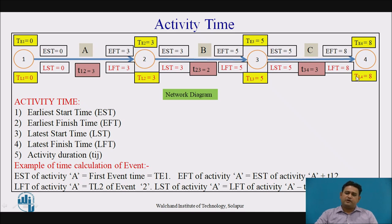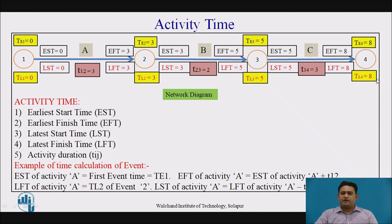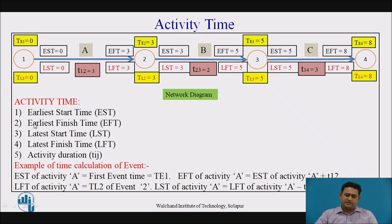For the backward path, having obtained the EST and EFT for all activities moving left to right, we now derive LST and LFT for each activity moving right to left. Once we get the latest event time of event 4, which is 8, the latest finish time equals 8. Then 8 minus 3 is 5, so the latest start time of activity C is 5. This 5 equals the latest event time of event 3, which is also the latest finish time of activity B. Then 5 minus 2 equals 3. Moving right to left, we get the latest start times for all activities.